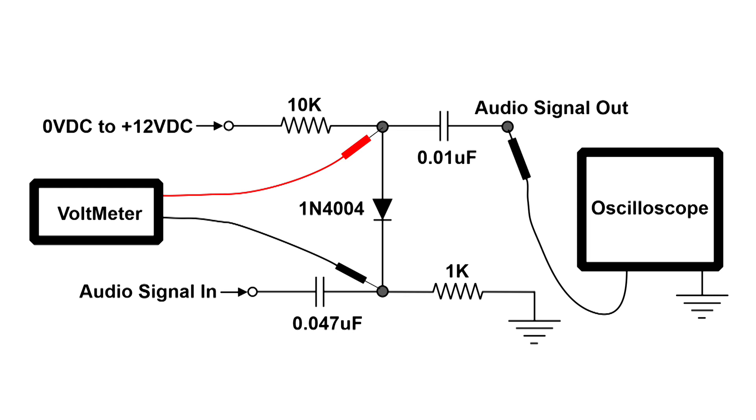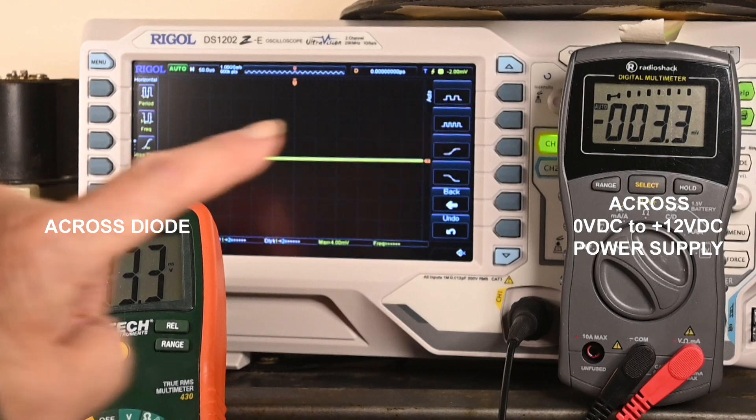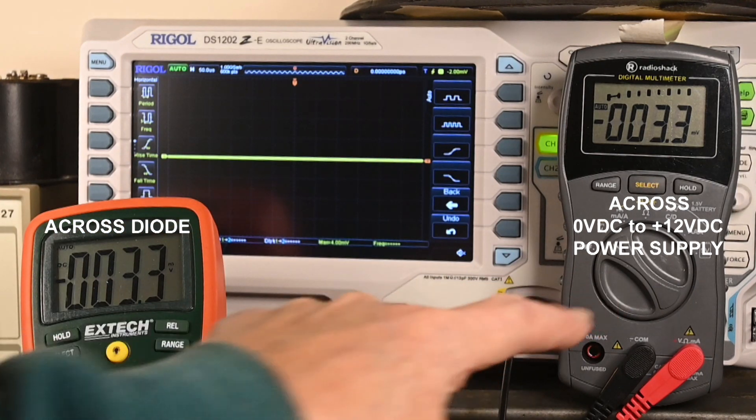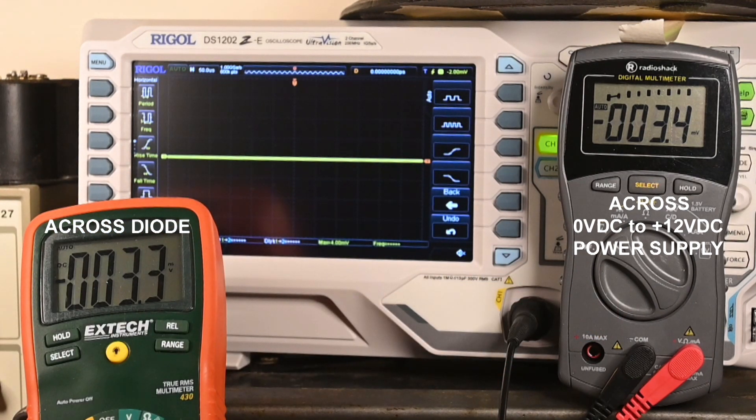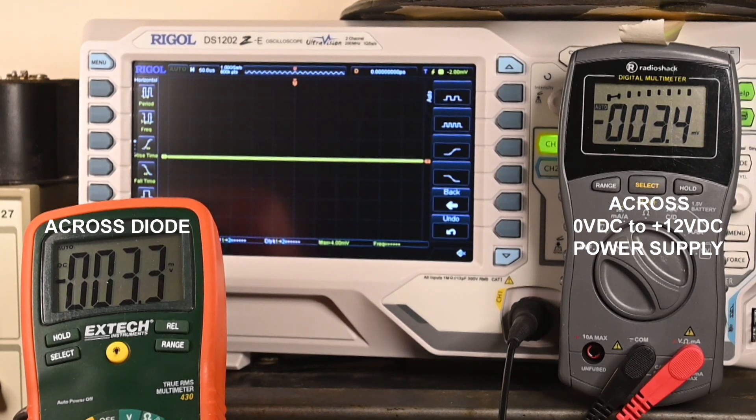And we're going to see what happens when I increase the voltage in this circuit, and what happens when that diode becomes forward biased. This meter is across the diode, and this meter is across the 0 to 12 volt supply. And as you can see, we don't have that turned on.